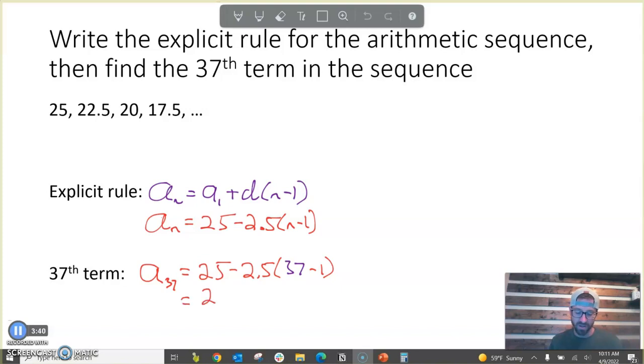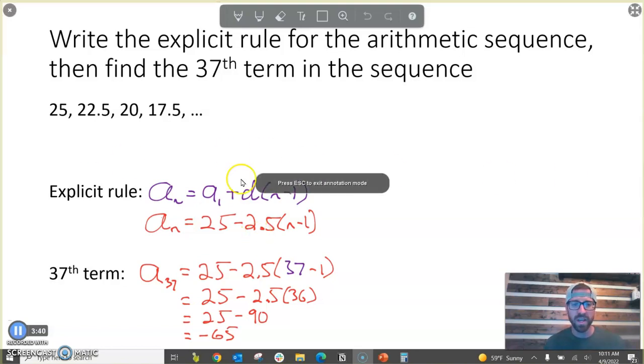So, now, if we simplify, just got a little bit of arithmetic to do, minus 2.5 times 36, which simplifies to 2.5 times 36 is 90. And that means that the 37th term in this sequence is negative 65. So, that's really everything that we needed to take away in this problem.